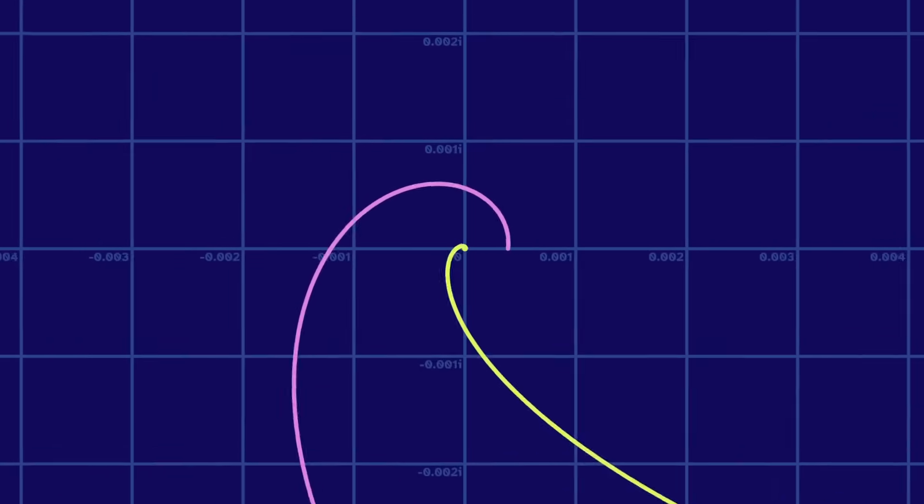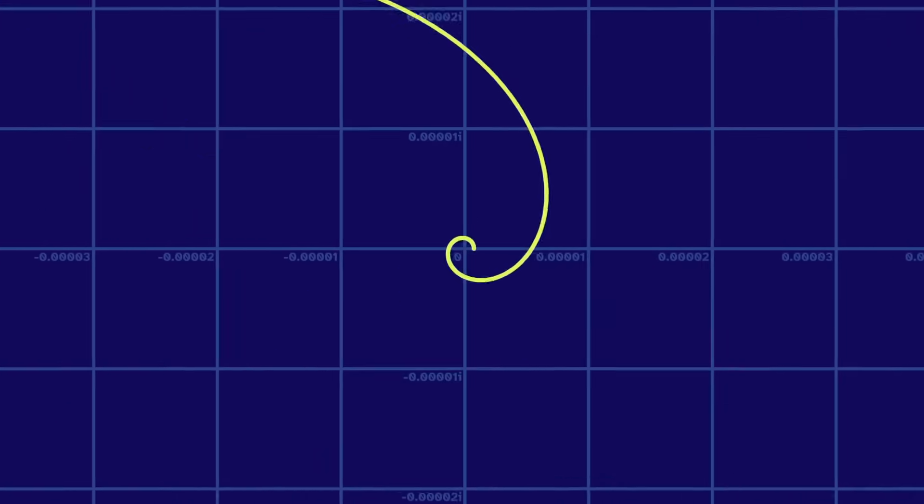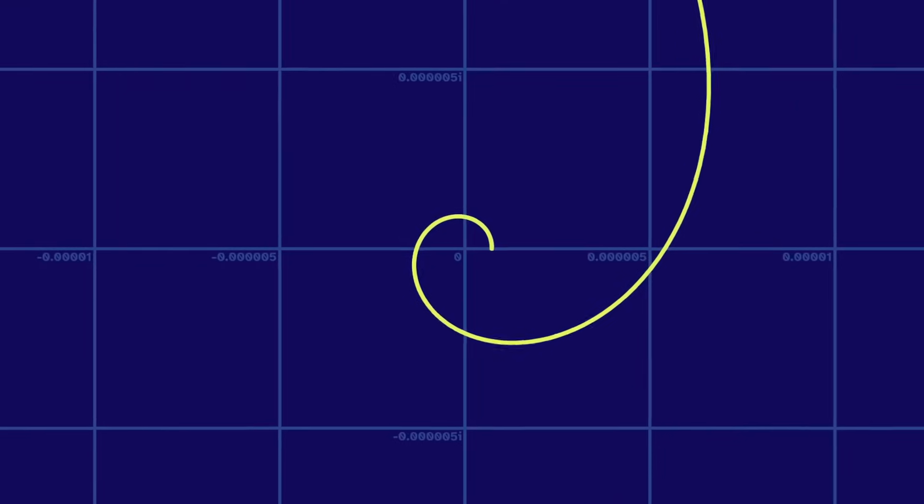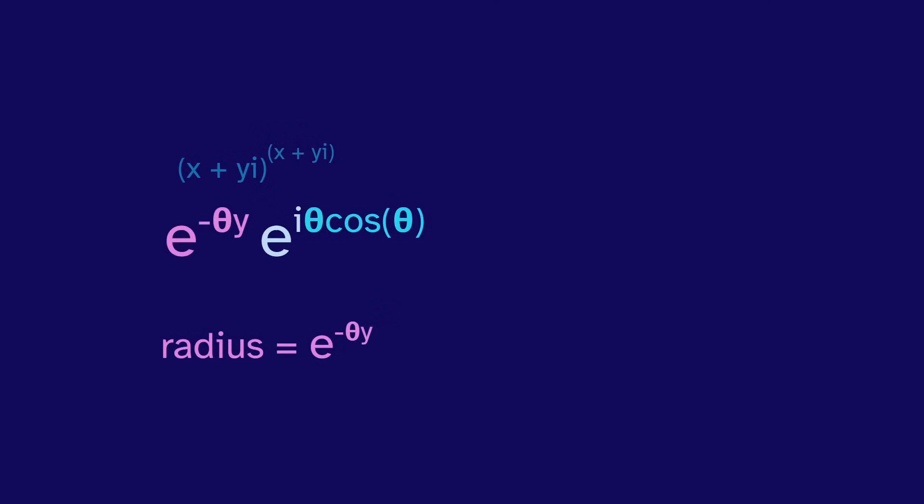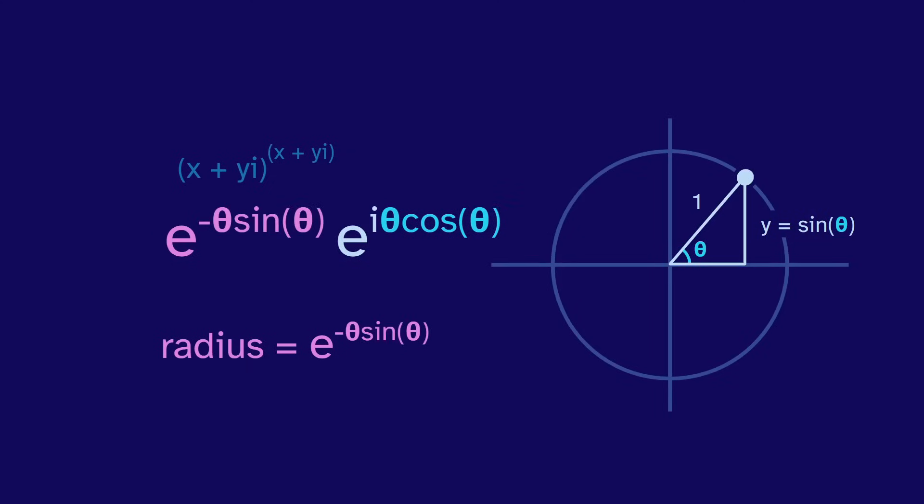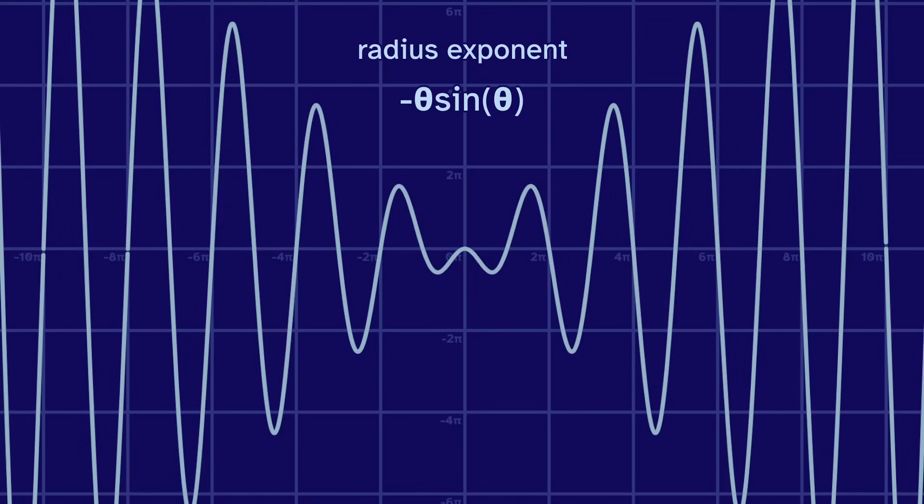So that explains the loops, but why does the radius approach 0 as we do the loops? Let's look at the radius in this equation. Y can be rewritten as the sine of theta, giving us this expression. Let's graph just that exponent.